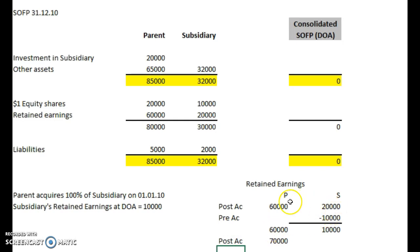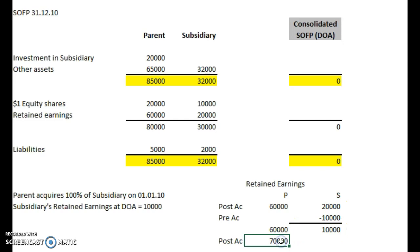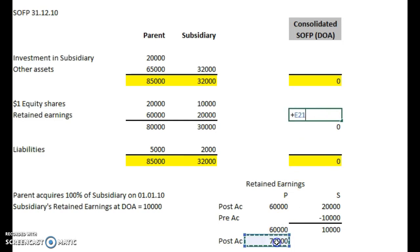So what we've done here: we've taken the total post-acquisition figures and removed the pre-acquisition earnings of the subsidiary only, because that's when we took control of the subsidiary and from that date we consolidate the earnings. We took out the pre-acquisition amount, which gives us 10,000, add those together, and that gives us 70,000 instead of 80,000 post-acquisition retained earnings. We can put that figure straight in as the consolidated post-acquisition earnings. Let's call that working one.